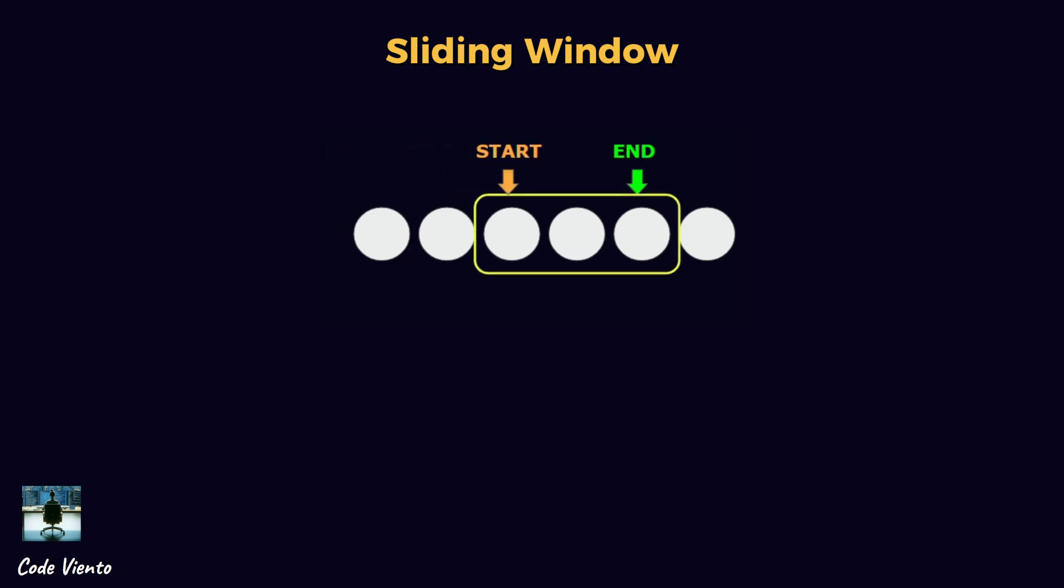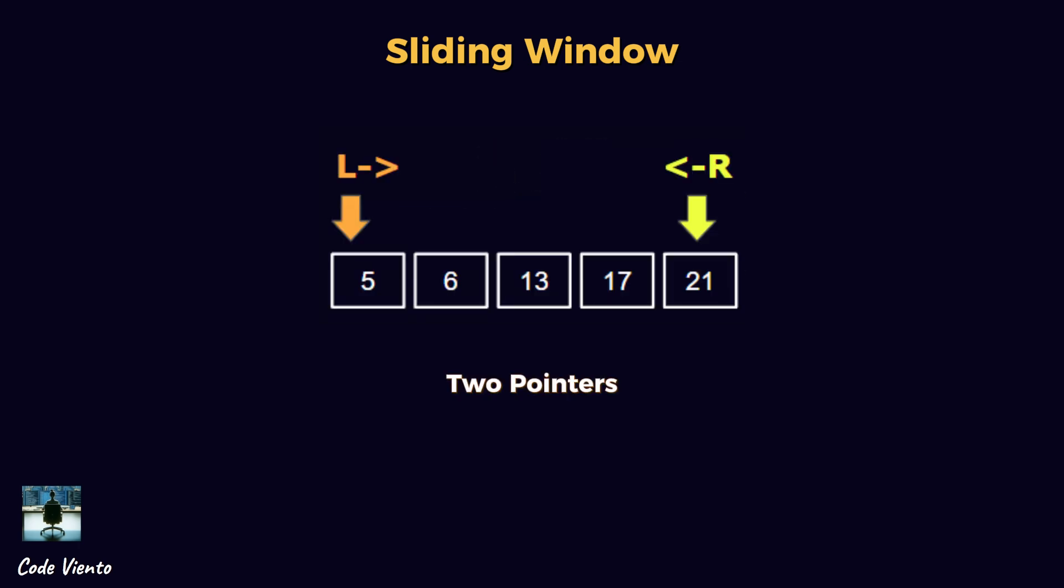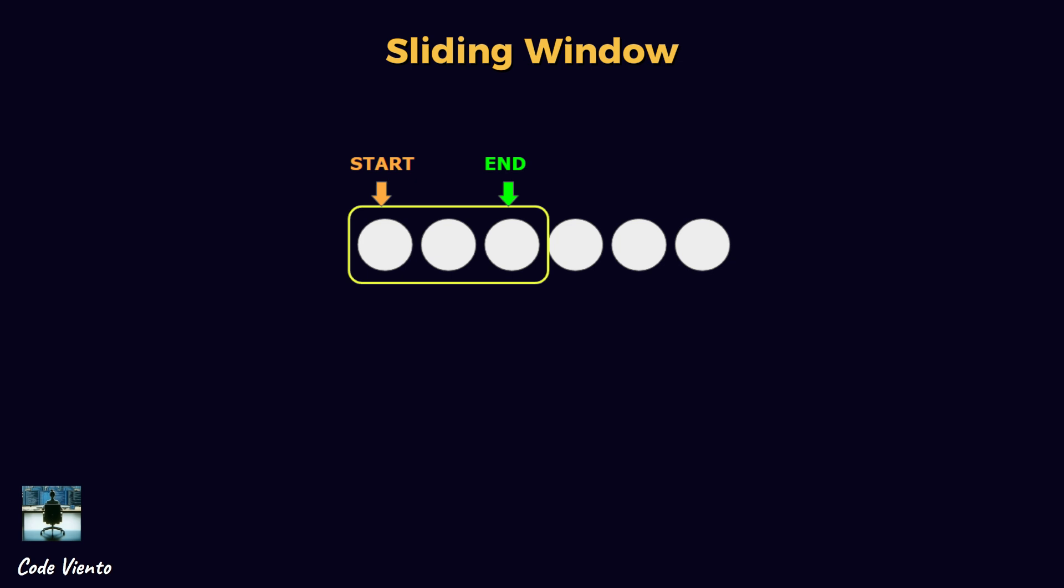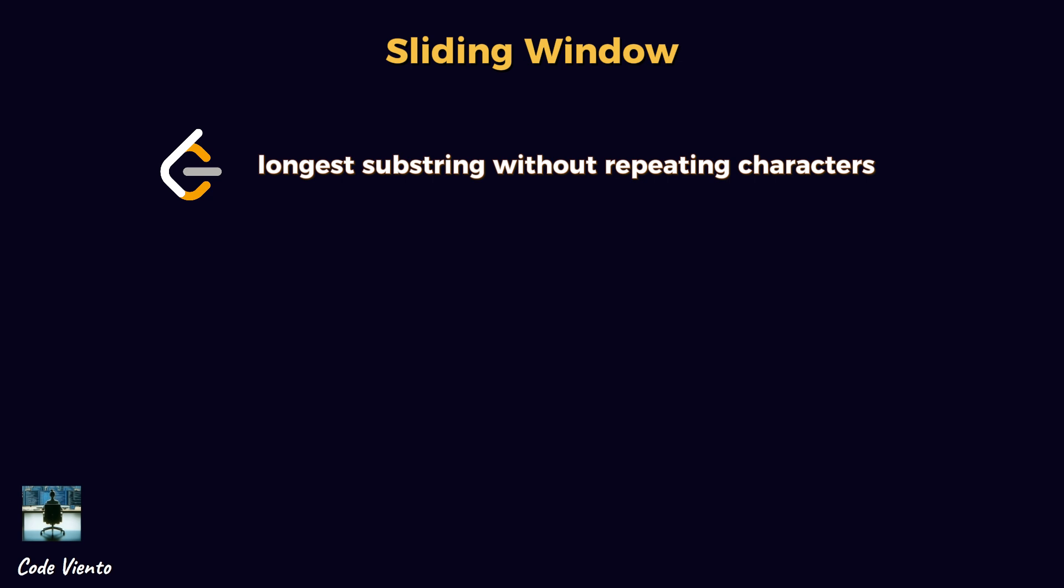Sliding window is closely related to the two-pointer technique, but there is a key difference. Two pointers are often used when comparing two elements or sections of an array (e.g., sorting, merging). Sliding window focuses on maintaining a subarray or substring that satisfies a condition, adjusting dynamically.